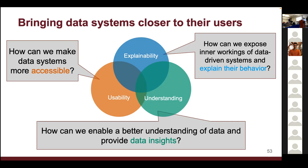Trustworthy ML and explanation are related — when something goes wrong, trust breaks. If we can explain and be transparent, people will start trusting models more. The explanation itself must be trustworthy, not just random data. There's a lot of research needed in parallel with machine learning, because machine learning capabilities are advancing but explainability often lags far behind — many people doing hyperparameter tuning don't know why their model isn't working.